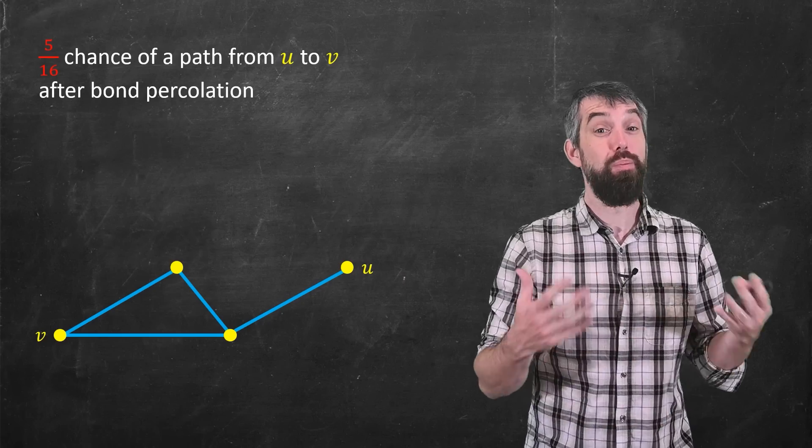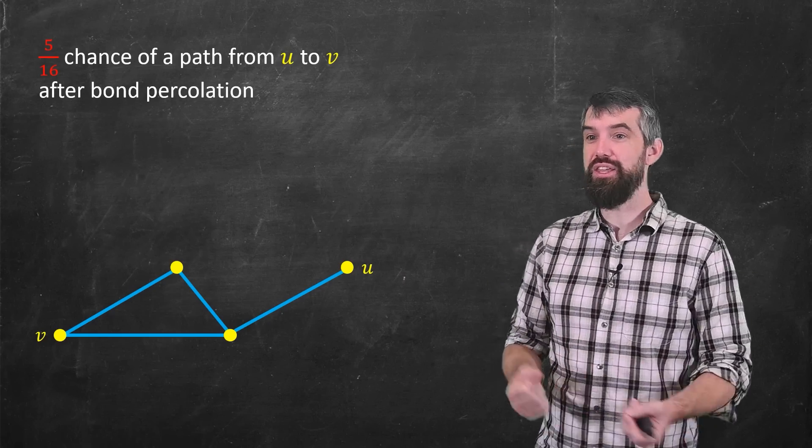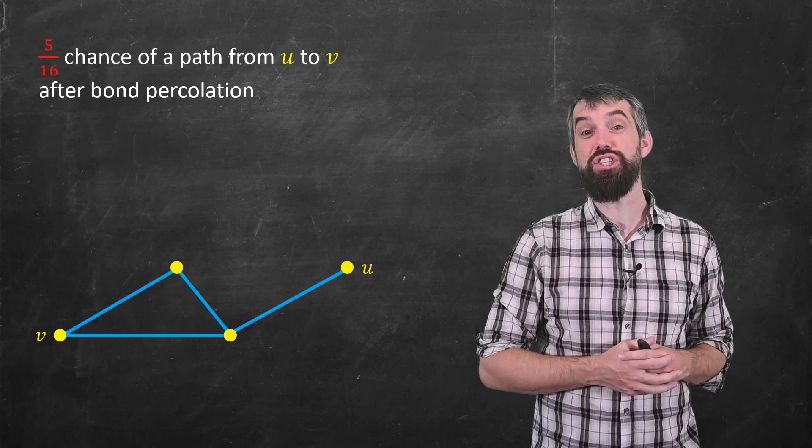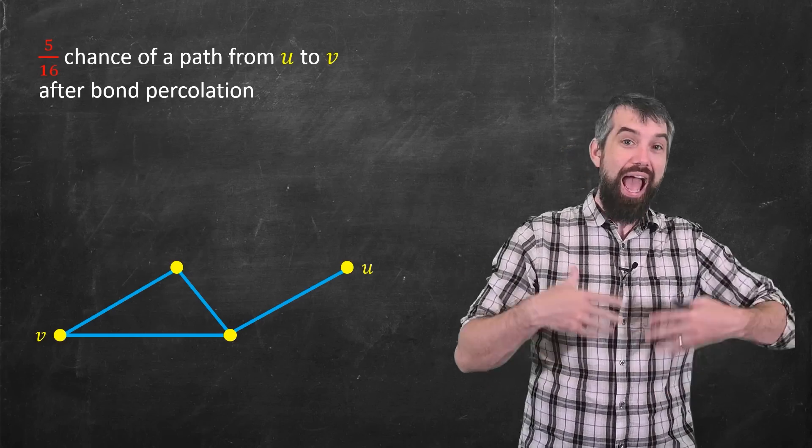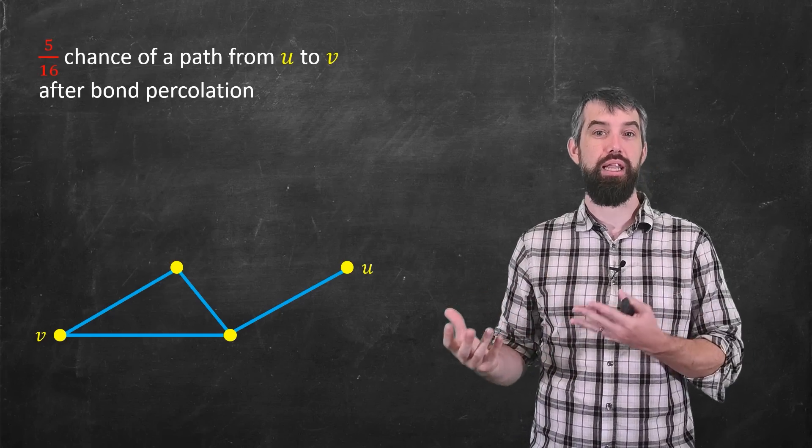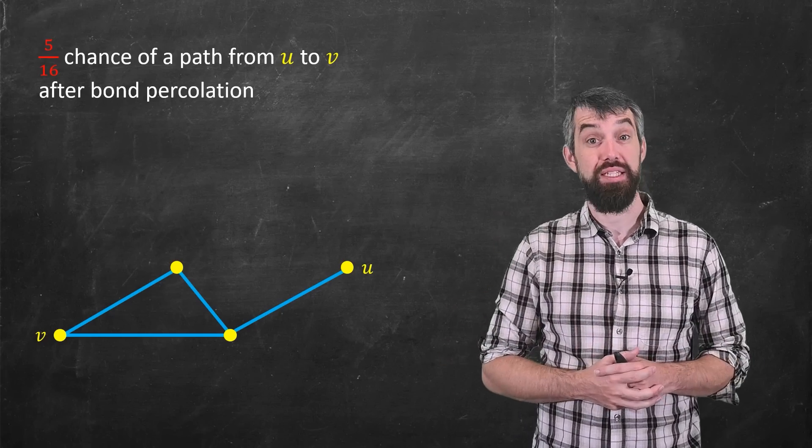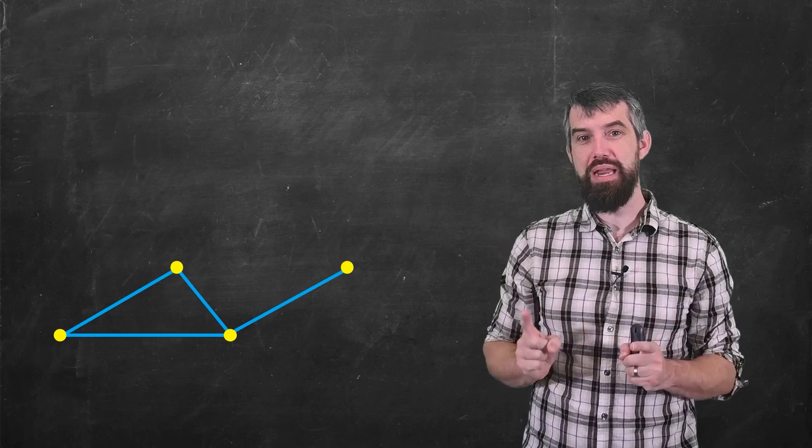And it turns out that in precisely five of them, is there a connection from the one side to the other, from the U to the V. I could say that there is a 5/16th chance such that there is still a path from U to V after you do this bond percolation, this fading away of these edges. But we're not yet at the bunk bed conjecture.